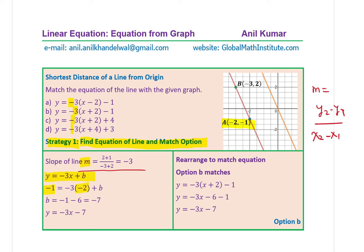When you bring it to the other side, it will be equal to -6. So this expression is 6 + b. When you bring 6 to the other side, you get -1 - 6, so you get the value of b as -7. Therefore, the equation is y = -3x - 7.